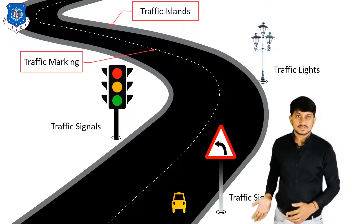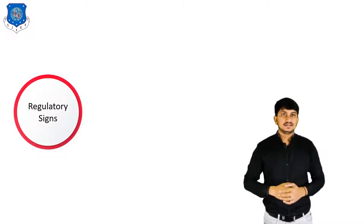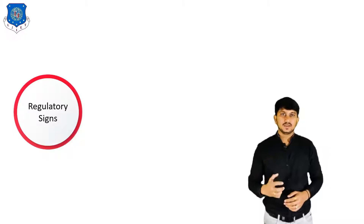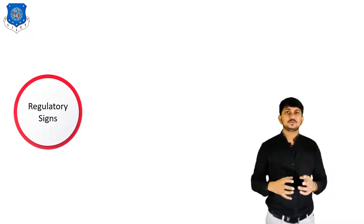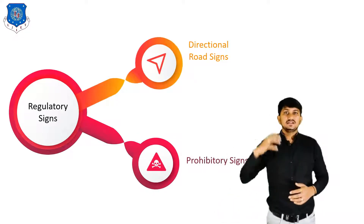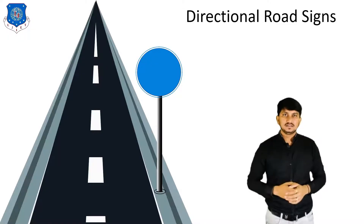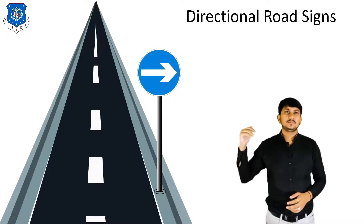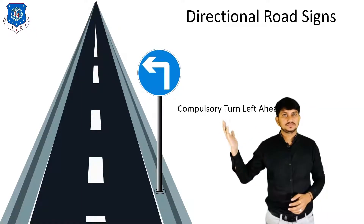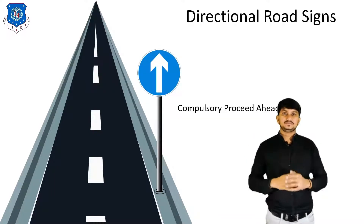Let's discuss Traffic Signs first. Basically, it is classified as Regulatory Sign, Warning Sign, and Informatory Sign. Regulatory Signs are meant to inform the road user of certain laws, regulations and prohibitions. It is further classified into two types: Directional Road Sign and Prohibitory Road Sign. Directional Road Signs have a blue background and white symbol. Different types of Regulatory Road Signs are like Compulsory Turn Left, Compulsory Keep Right, Compulsory Keep Left, and Compulsory Proceed Ahead.